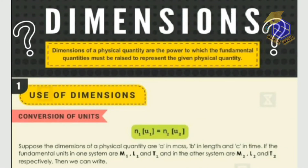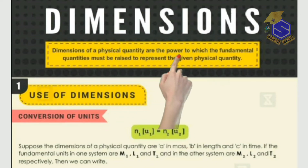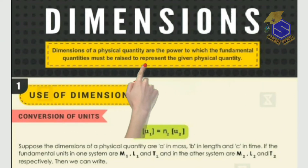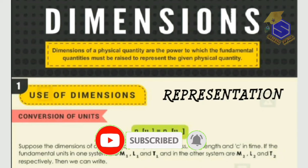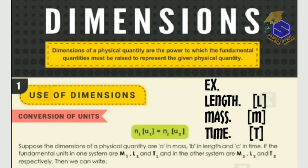Moving forward — what is dimension? The dimension of a physical quantity is the power to which the fundamental quantities must be raised to represent the given physical quantity. In simple terms, representing a physical quantity or a derived quantity in terms of fundamental quantities is called its dimension — that is, the powers to which fundamental quantities are raised to represent a derived quantity.